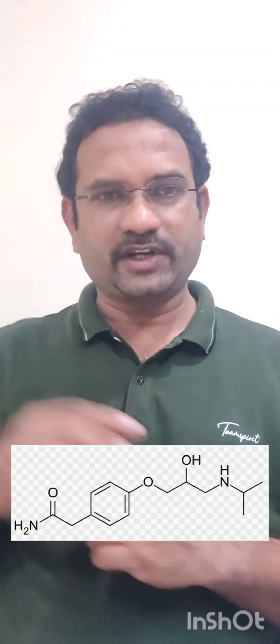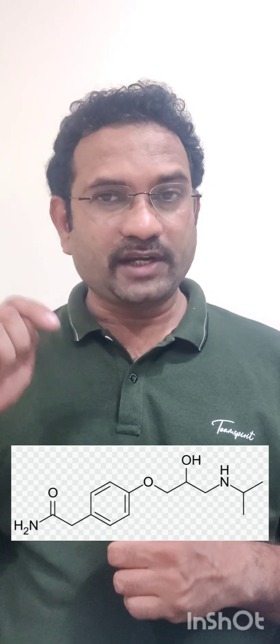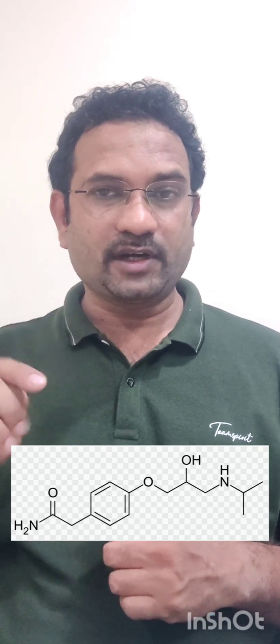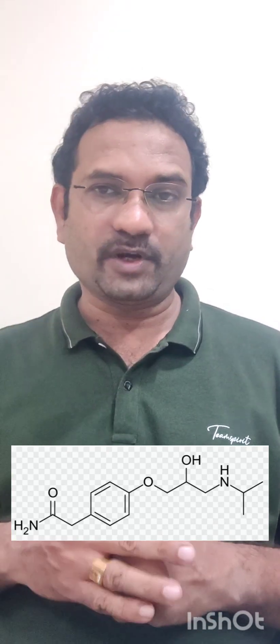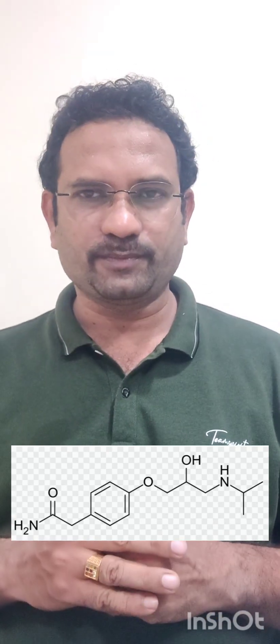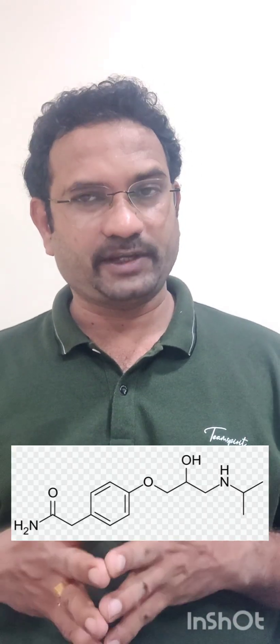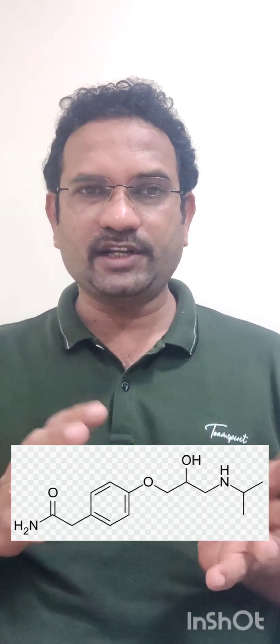Whereas atenolol — see its structure — is an amide derivative. In fact, 95% of atenolol will not get metabolized because it is already water soluble, and it stays for a longer period of time. This is what structure activity relationship means.